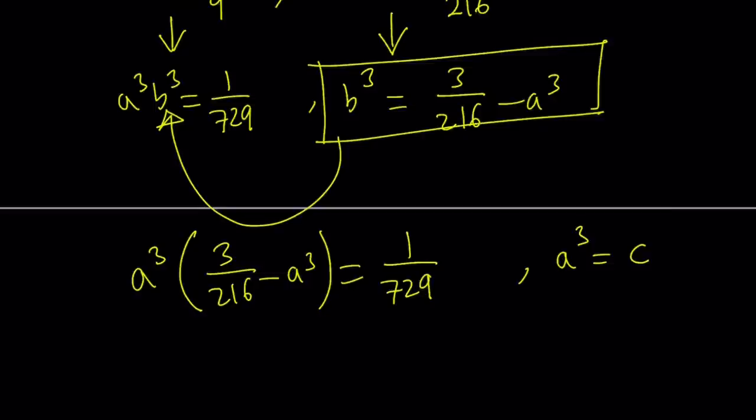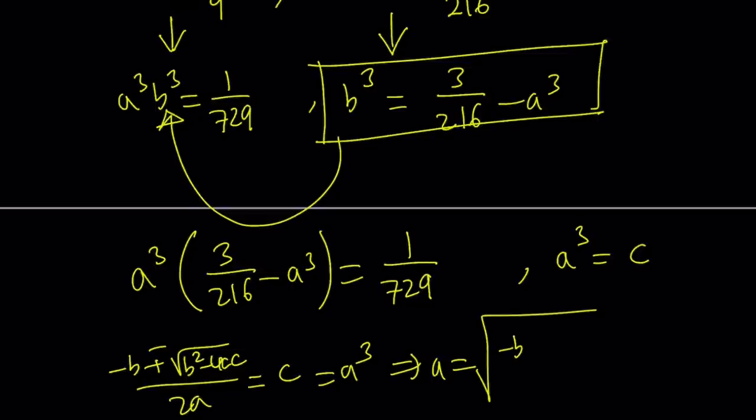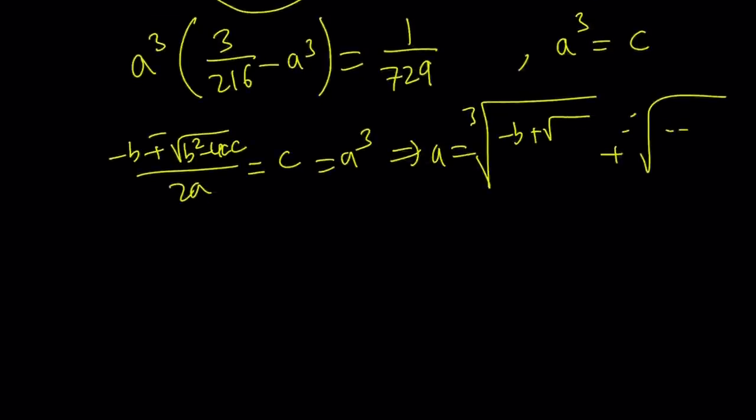Remember, with the quadratic formula, we get negative b plus minus the square root of b squared minus 4ac over 2a. And then these are going to be the c value. And that's going to equal a cubed. a is just going to be the cube root of one of the solutions. And then the other one is just going to be the cube root of the other solution. Anyway, this is very painful. Let's go ahead and talk about the second method, which is much, much better.